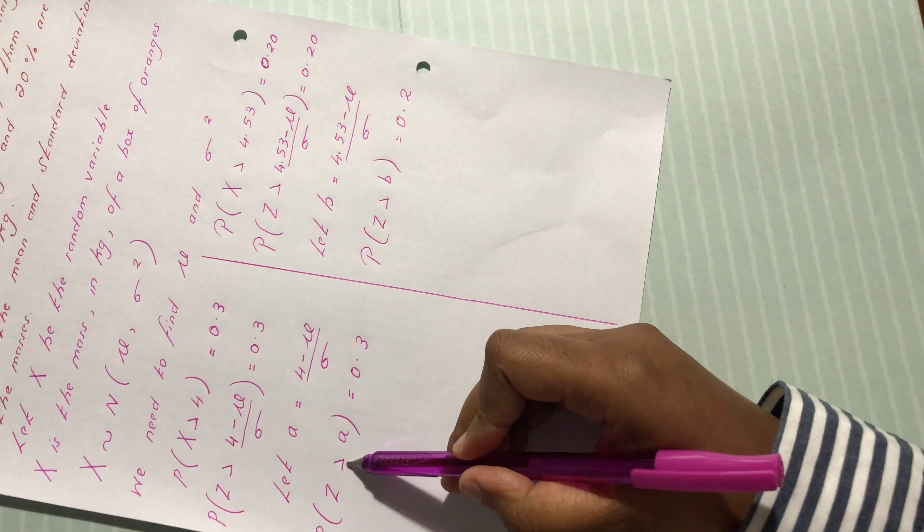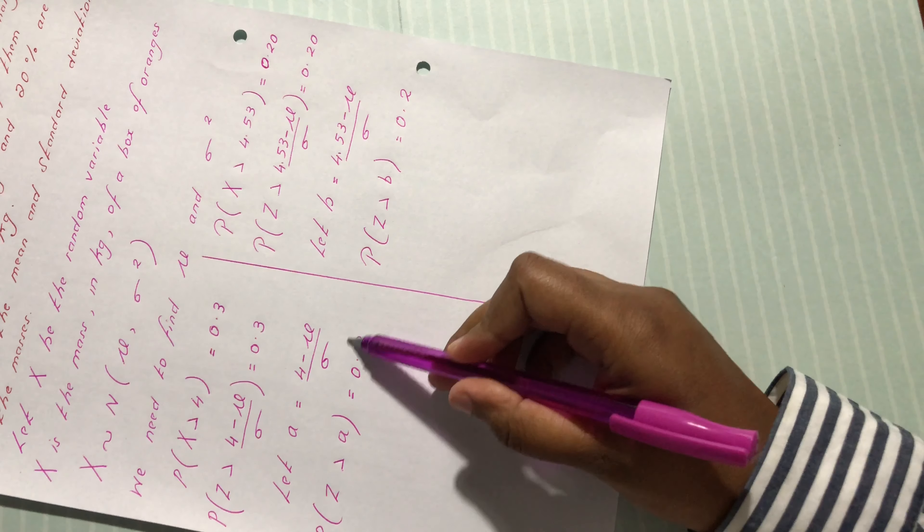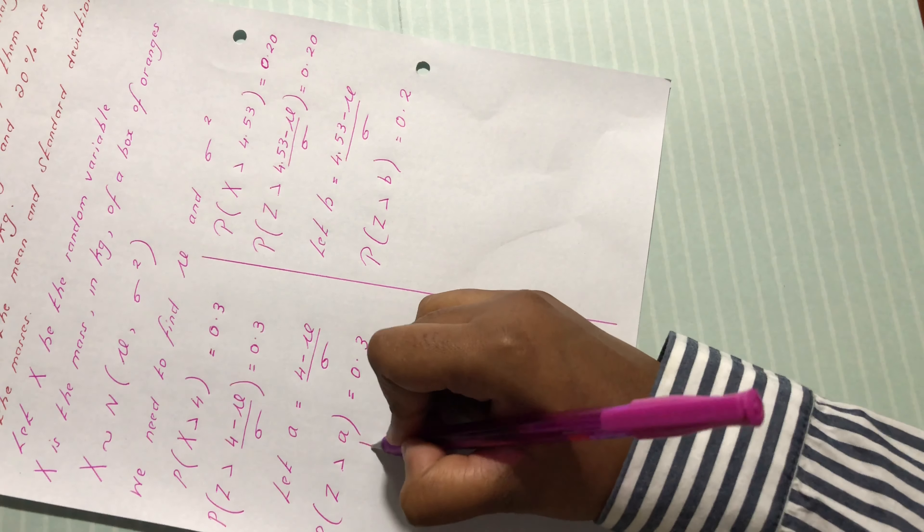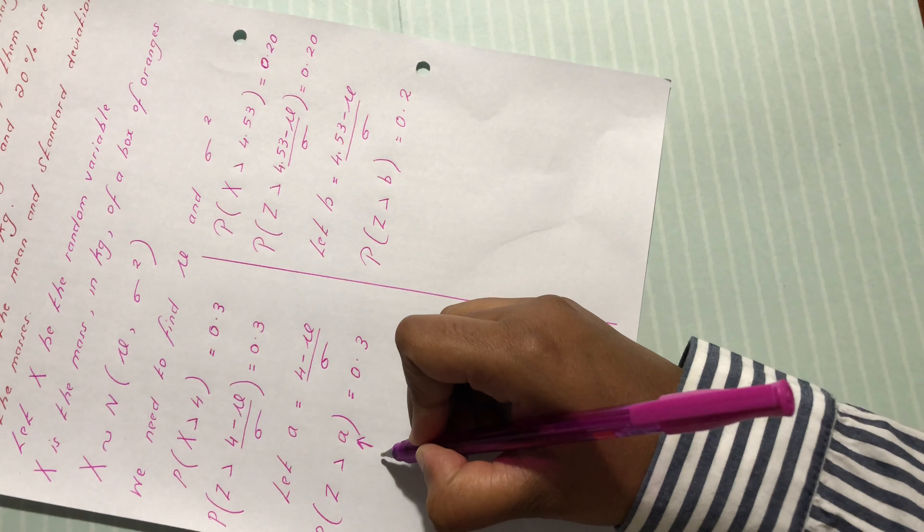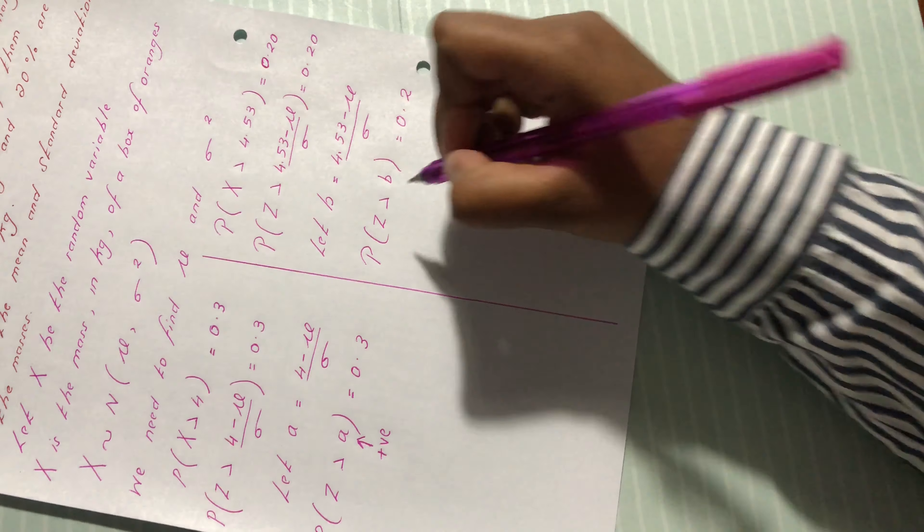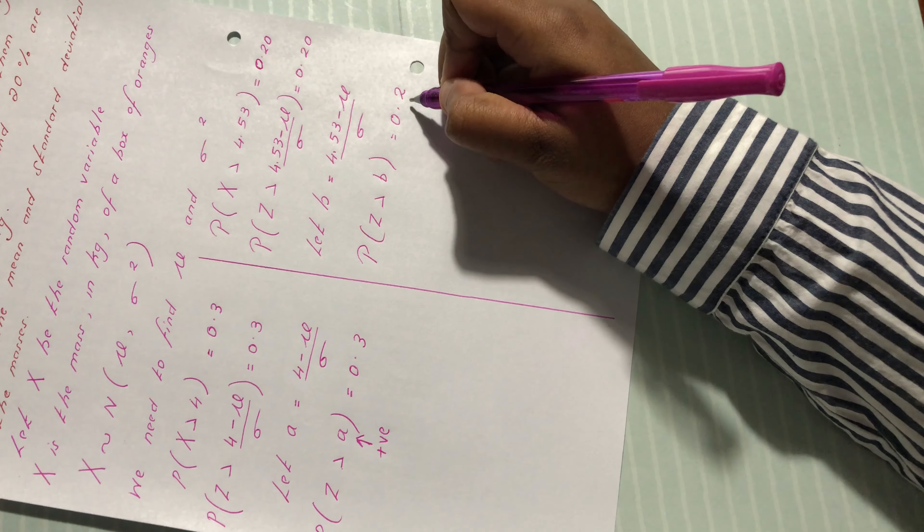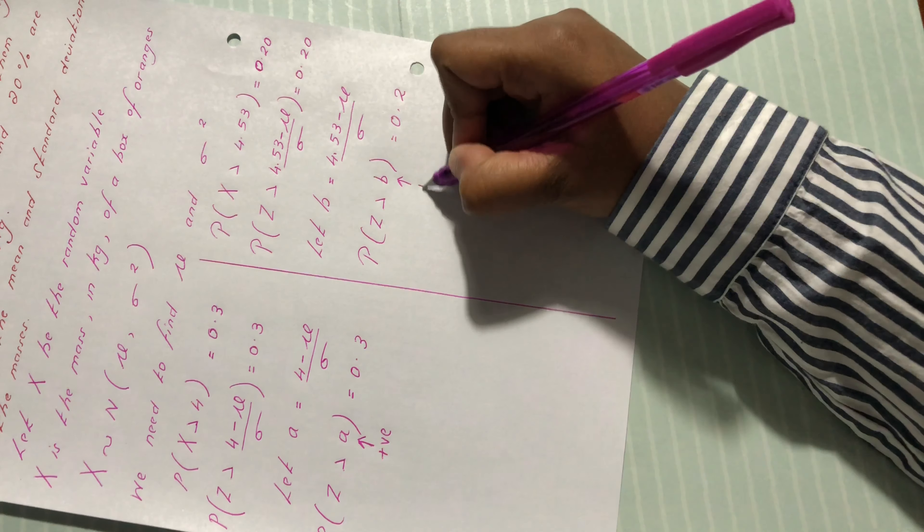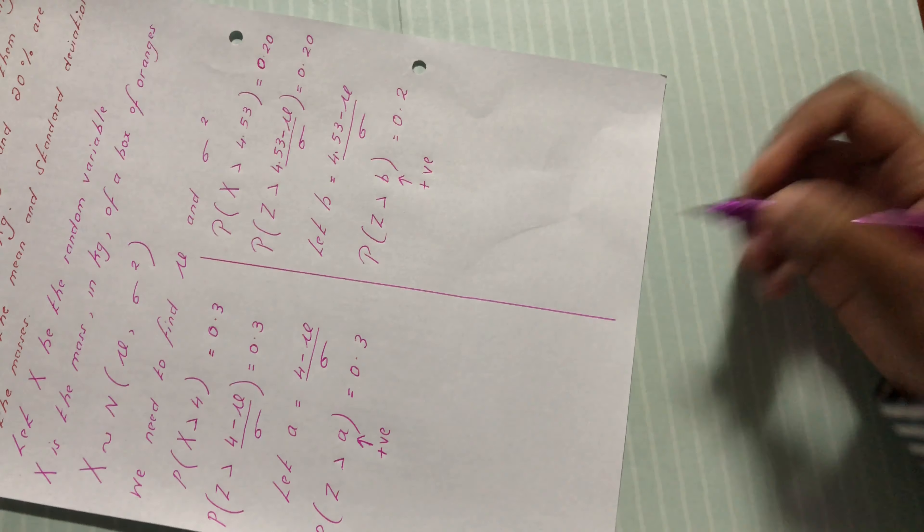Now let's see. We have greater than a, and the probability is less than 0.5, which means a must be positive. Here we have a probability of 0.2, again less than 0.5, so b also must be positive.